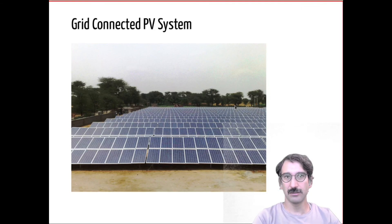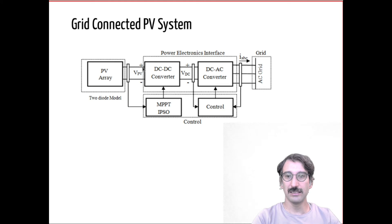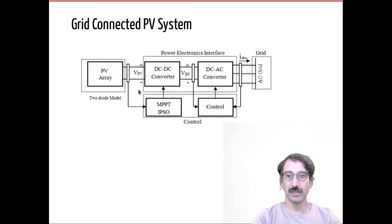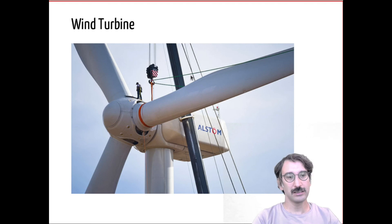Let's look at what's inside a grid-connected PV system. The photovoltaics generate DC, but the DC level changes depending on light intensity, so you need a DC-to-DC converter to get a more or less constant voltage. Here MPPT stands for maximum power point tracker, which tries to maximize the efficiency of the photovoltaic system. Once you have the DC, you need a DC-to-AC converter to send that power to the three-phase 50 Hz grid.